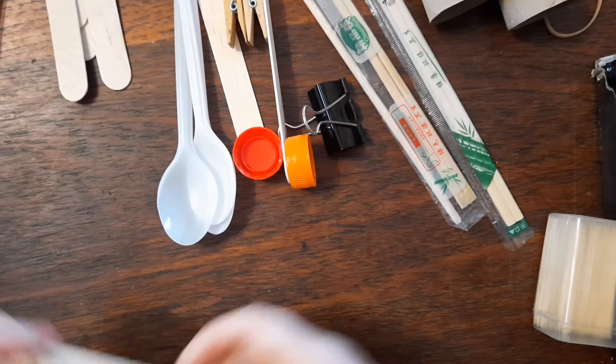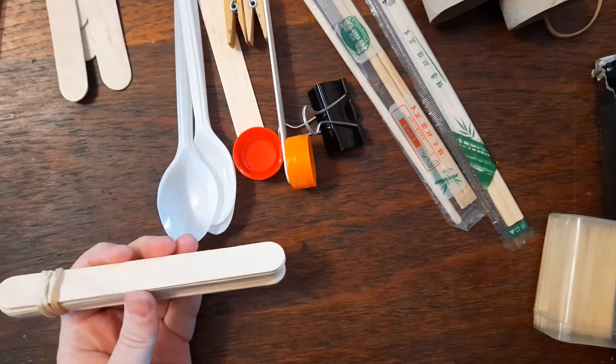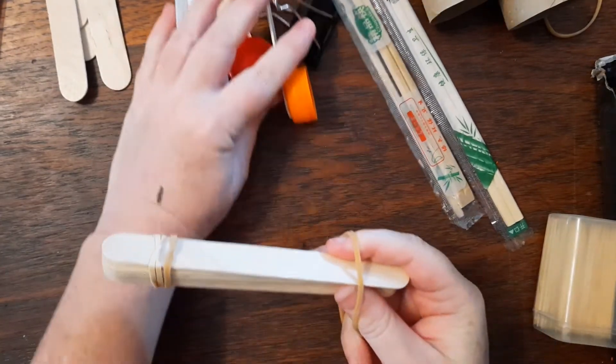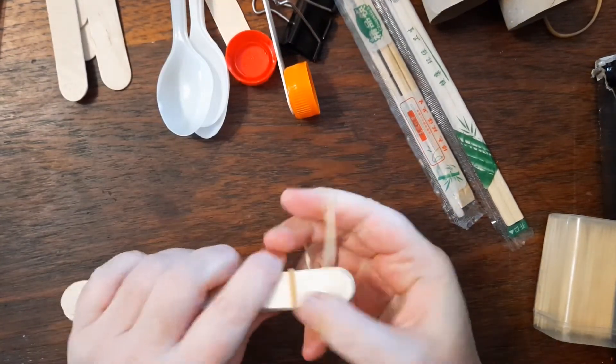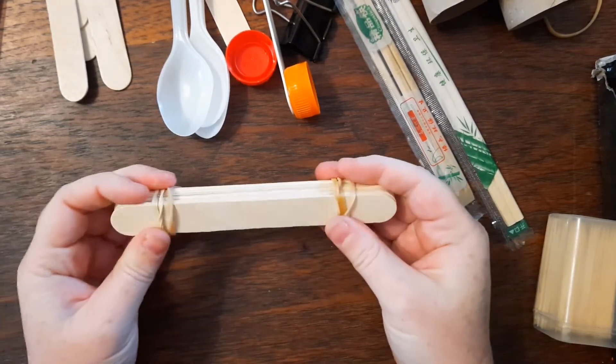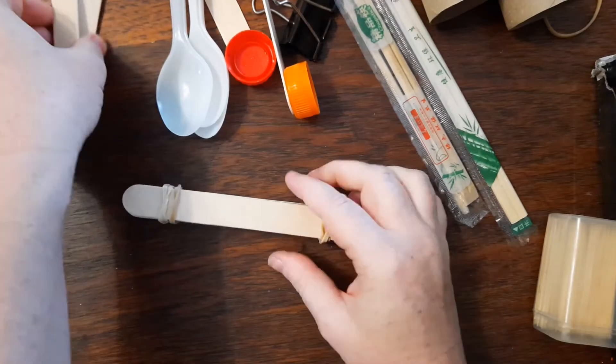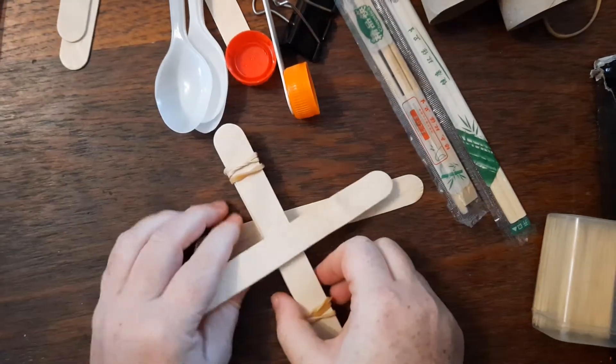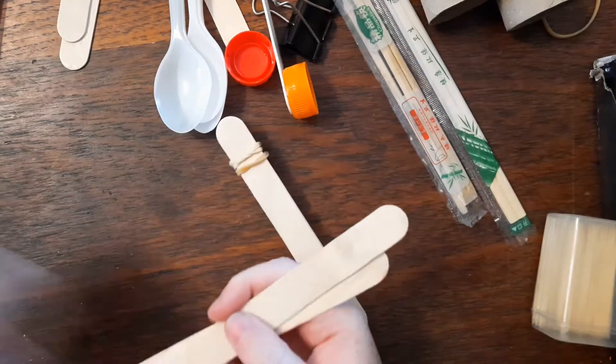You can experiment with how many ice cream sticks combined works best. You do that by trial and error because you're working with levers here, so the thickness of those sticks will determine the fulcrum, which is where the lever meets those sticks.